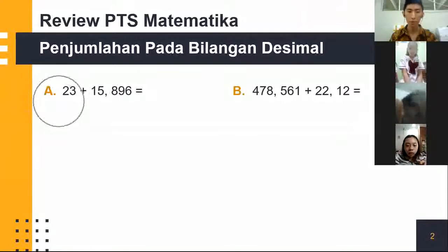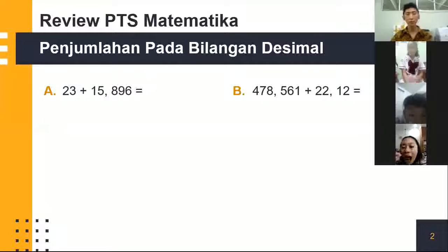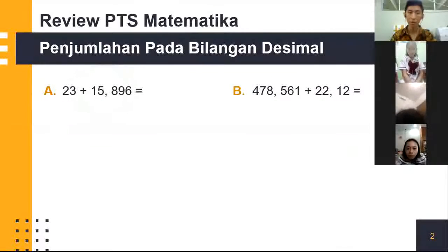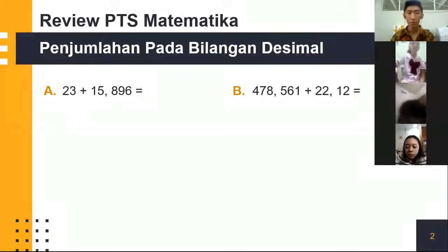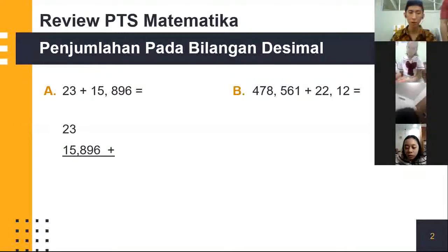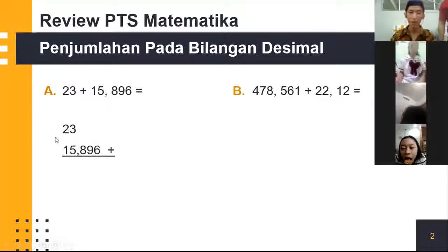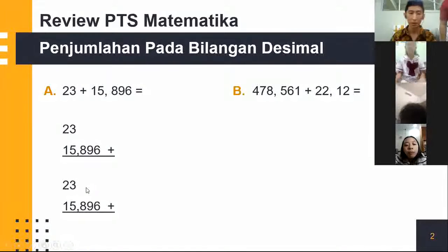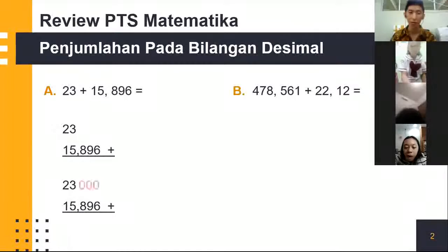Ini contoh soal pertama tentang penjumlahan pada bilangan desimal. Contoh soalnya adalah 23 ditambah 15,896. Itu hasilnya berapa? Untuk mengerjakan soal tersebut kita harus jabarkan dulu ya. Kita susun seperti ini: 23, kemudian 15,896. Ingat, koma ini harus ada di belakang bilangannya yang utama. Kalau diperhatikan, sebenarnya di sini ada angka 0 walaupun kita tidak tulis. Saya tambahkan angka 0 supaya mudah bagi kita untuk menjumlahkannya.